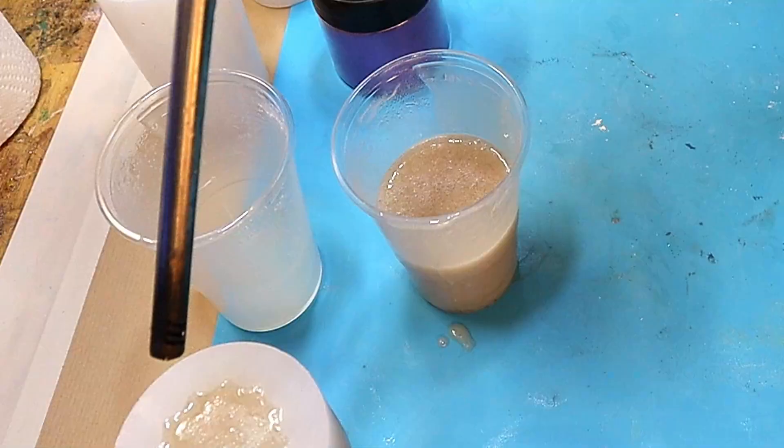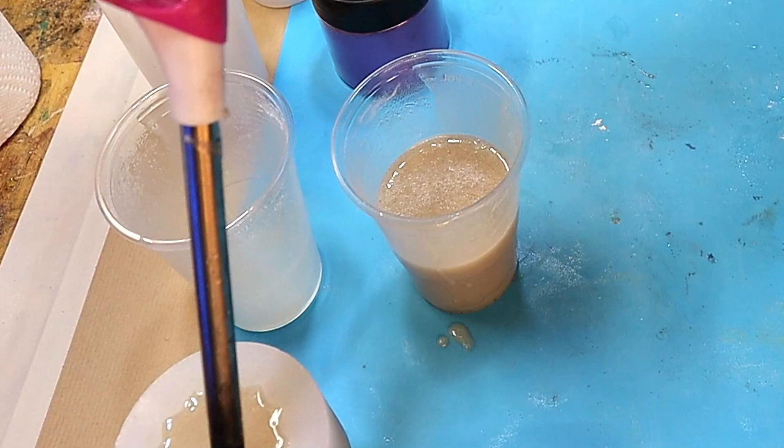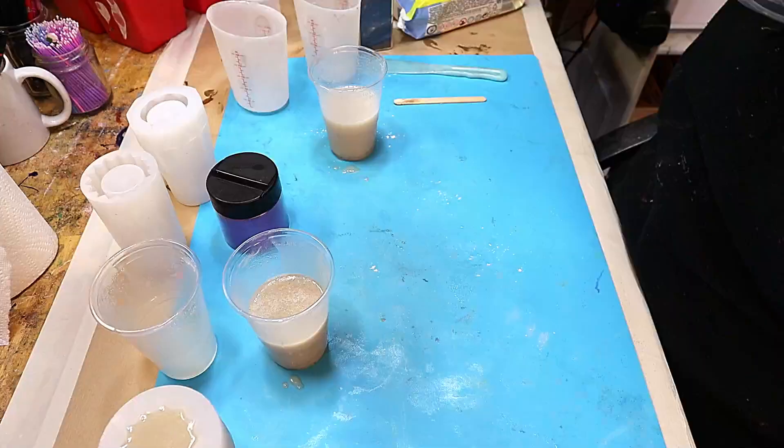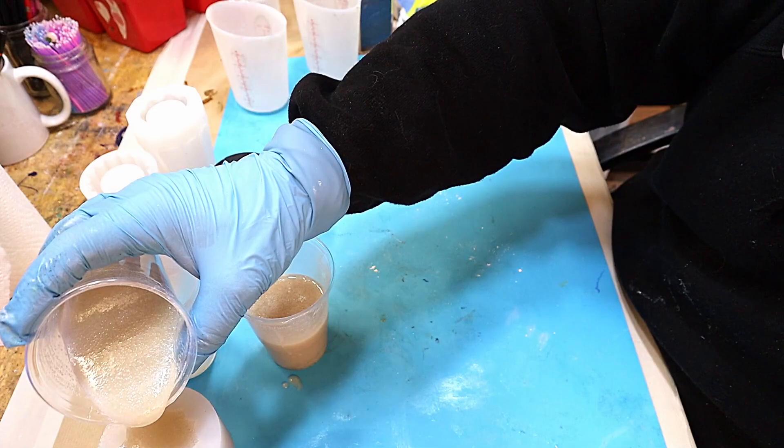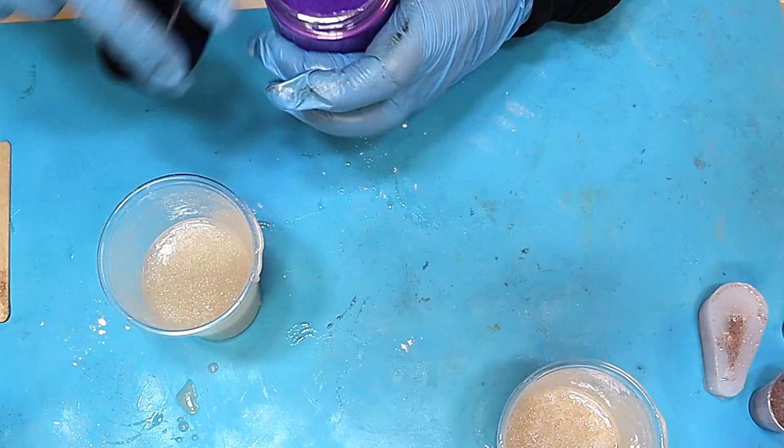So I've scraped off the excess and what I'm going to do is leave that to cure up. Again going back over these can you see how many bubbles have come up. Now the bubbles don't seem half as bad once I start putting other stuff in. It's just the ones where I haven't used anything that the bubbles seem to be the worst.